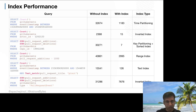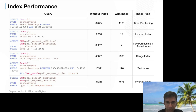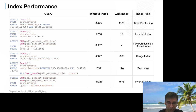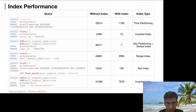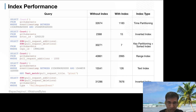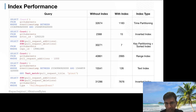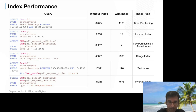Pinot doesn't support joins — the key decision is to be the fastest single-table query engine. For joins, Pinot uses Presto via a powerful connector: Pinot pushes down as much as possible and Presto handles the join. Pinot also has a Spark connector. Notably, Pinot uses a streaming connector for Presto, so results are streamed back in blocks as they're computed rather than waiting for full computation.